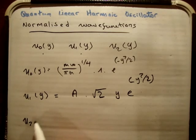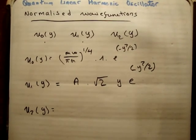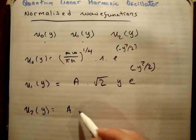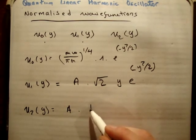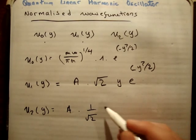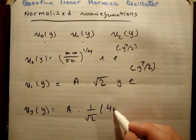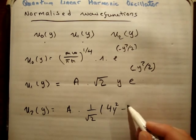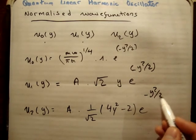And I'm going to say that U2 of y is going to be equal to our constant again, times 1 over, now just bear with me, I'm not going to explain this in a moment, 4y squared minus 2 times e to the minus y squared over 2.